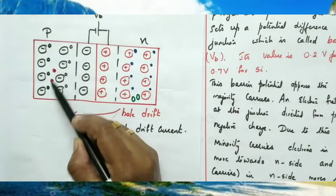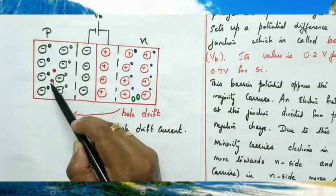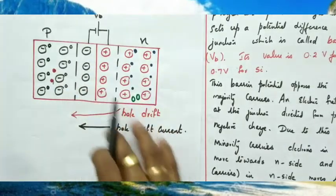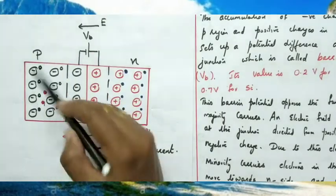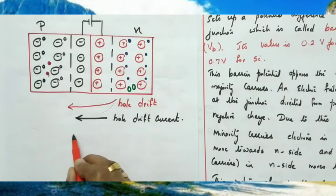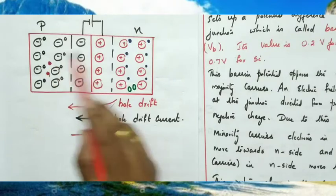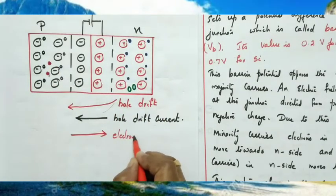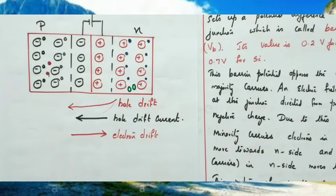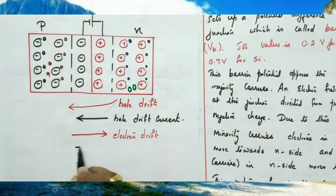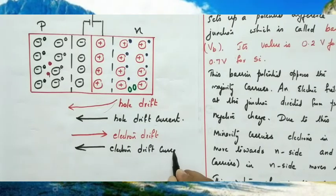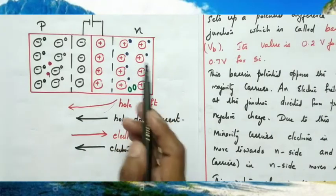Similarly, in the P region the minority carriers are electrons. Electrons move in the direction opposite to the electric field. Since the electric field is towards the left, electrons experience a force opposite to that direction and move from the P region to the N region — that is electron drift. Electrons drift from P to N, and the electron drift current is in the opposite direction — from N to P.